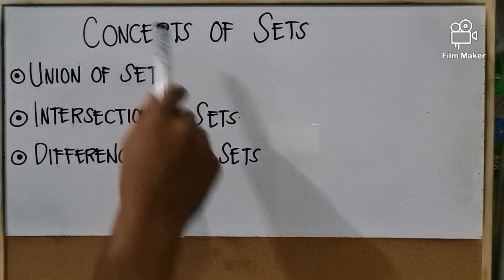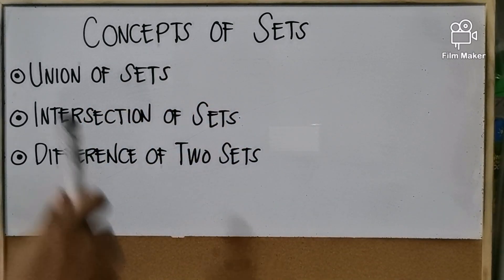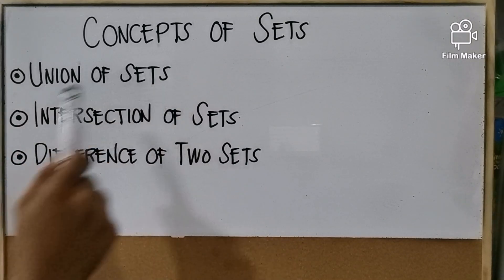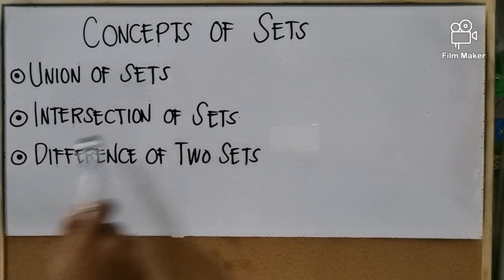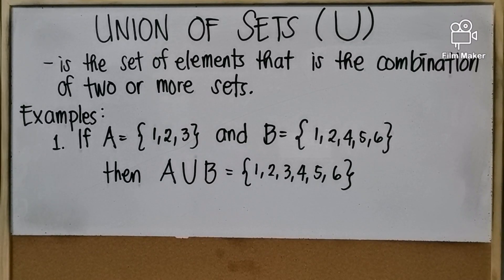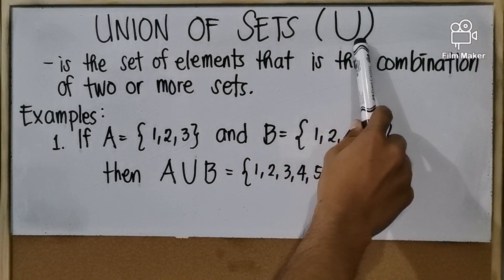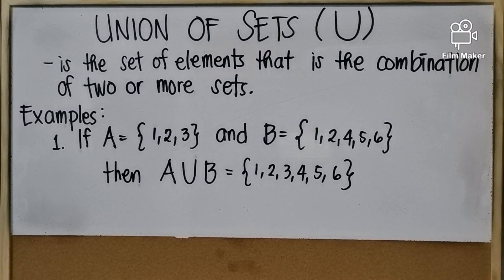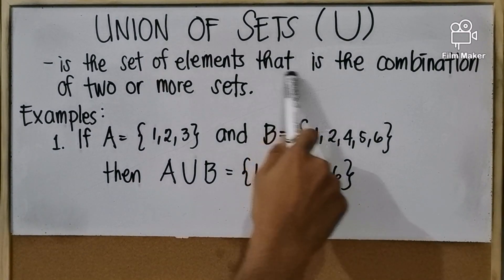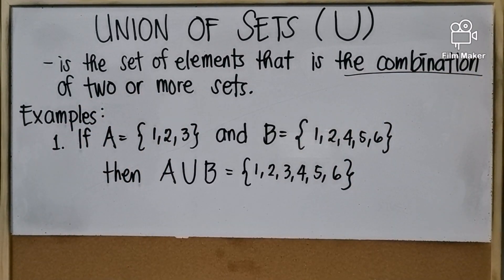Next we have the concepts of sets. There are three concepts: first, union of sets; next, intersection of sets; and lastly, difference of two sets. Let's start with union of sets, which is denoted by the ∪ symbol. Union of a set is the set of elements that is the combination of two or more sets.